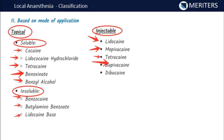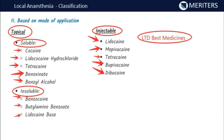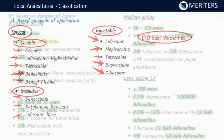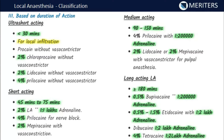Injectable local anesthetics include lidocaine, mepivacaine, tetracaine, bupivacaine, and dibucaine. A useful mnemonic to remember the injectables is 'Limited Best Medicines': L = lidocaine, T = tetracaine, B = bupivacaine, D = dibucaine, M = mepivacaine.